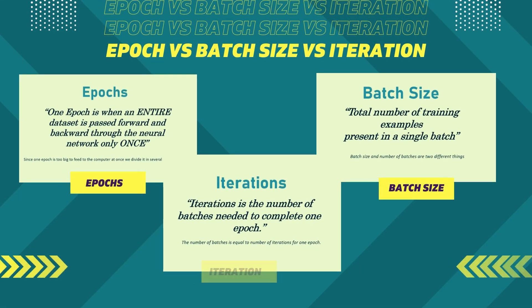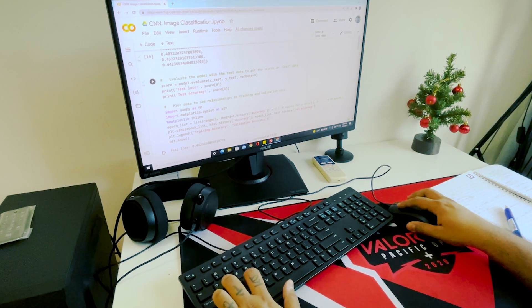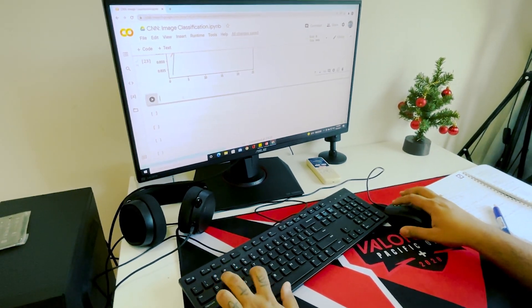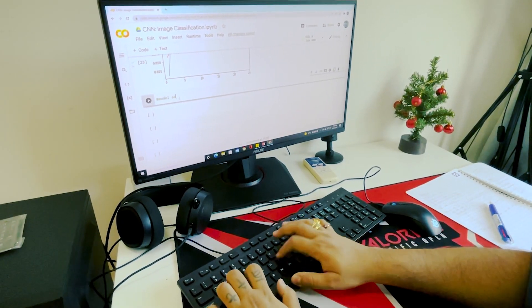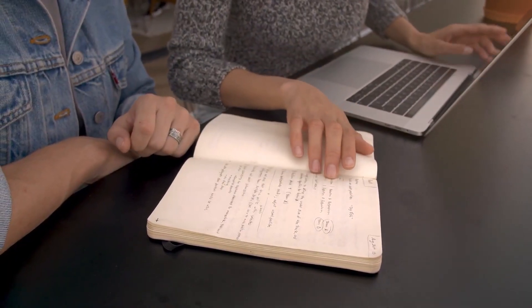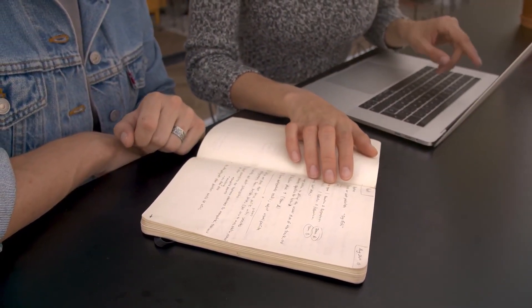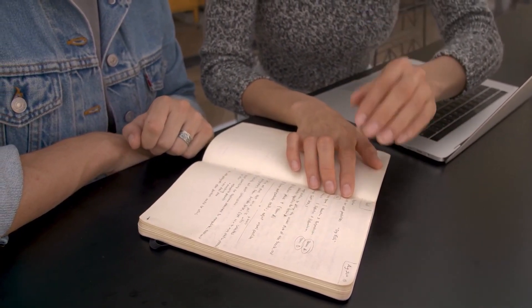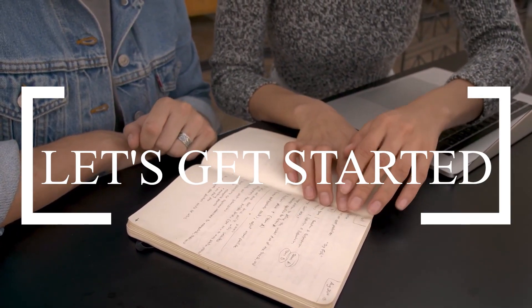Have you ever been confused about the conceptualization of batch size, epoch, and iterations in neural networks? Believe me, most enthusiasts often suffer to know the differences between these ideas. This video will discuss the concepts of batch size, epoch, and iterations with some live examples. Let's get started.